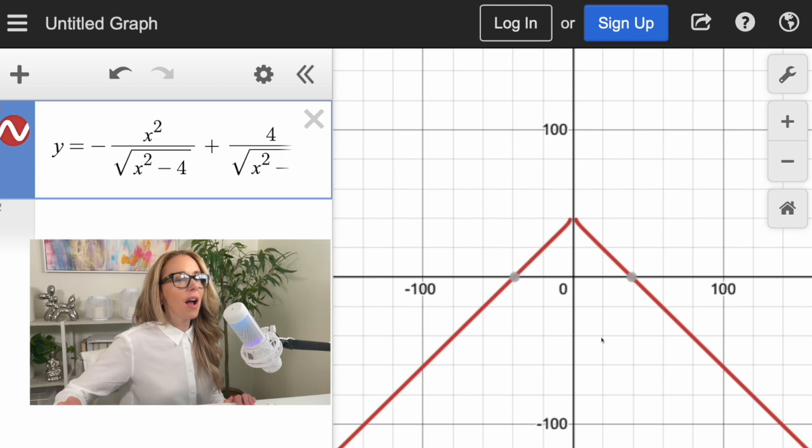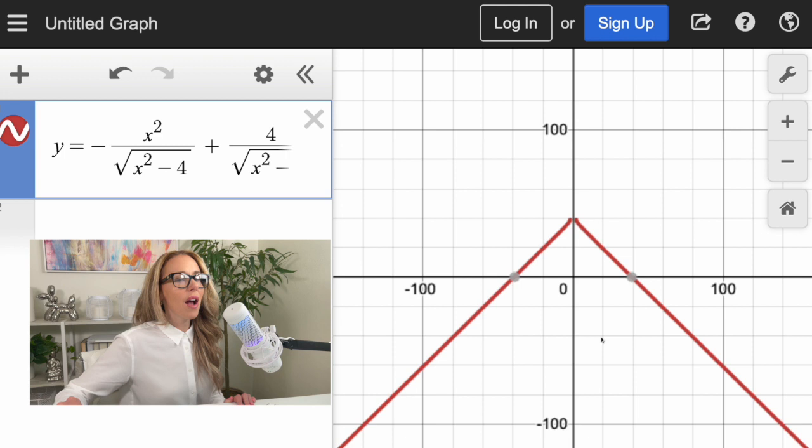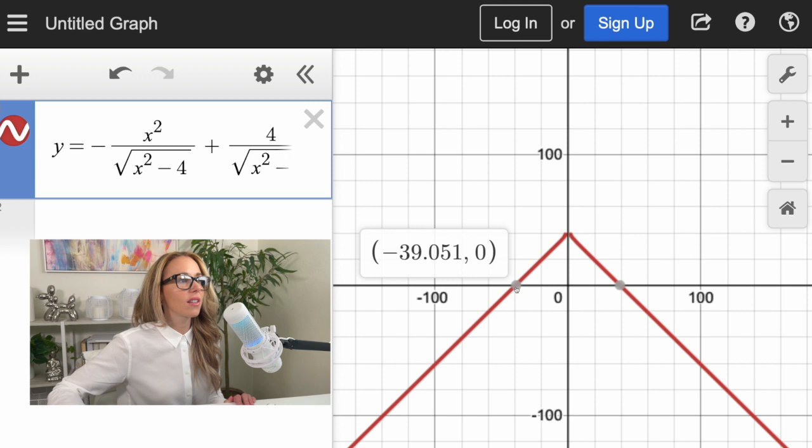Now this is what my function looks like. I want to know where the solutions are. The solutions are where it crosses the x-axis, much like a quadratic. When I hover my mouse over this, I see there's a solution at negative 39.051 and also one at positive 39.051.